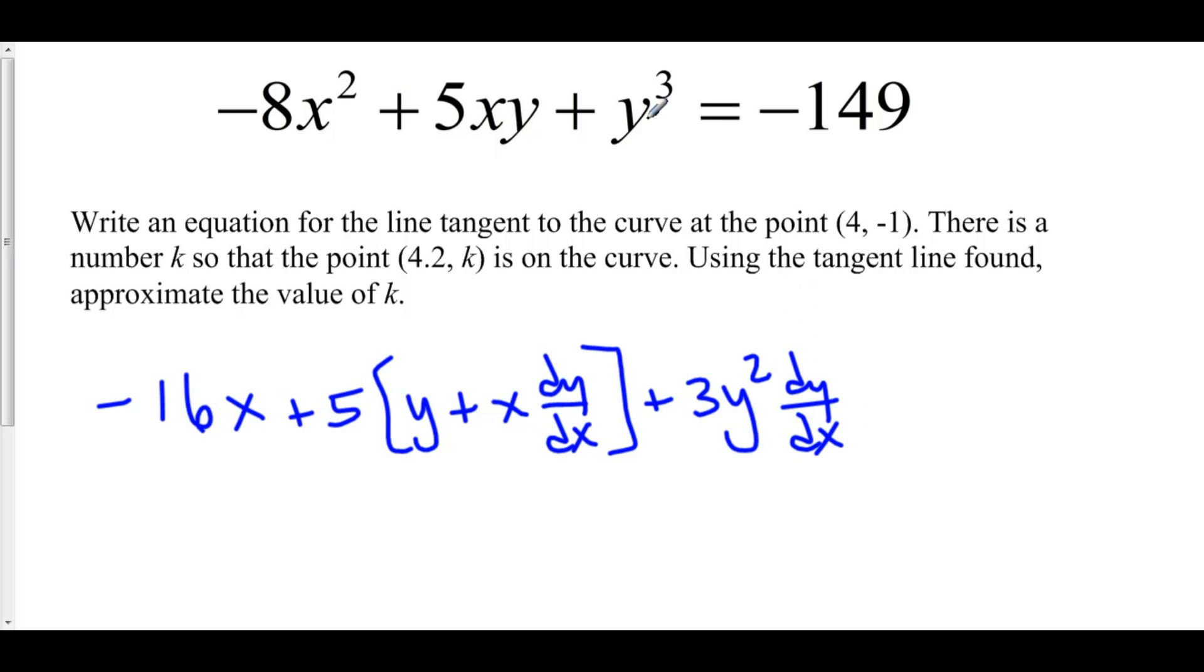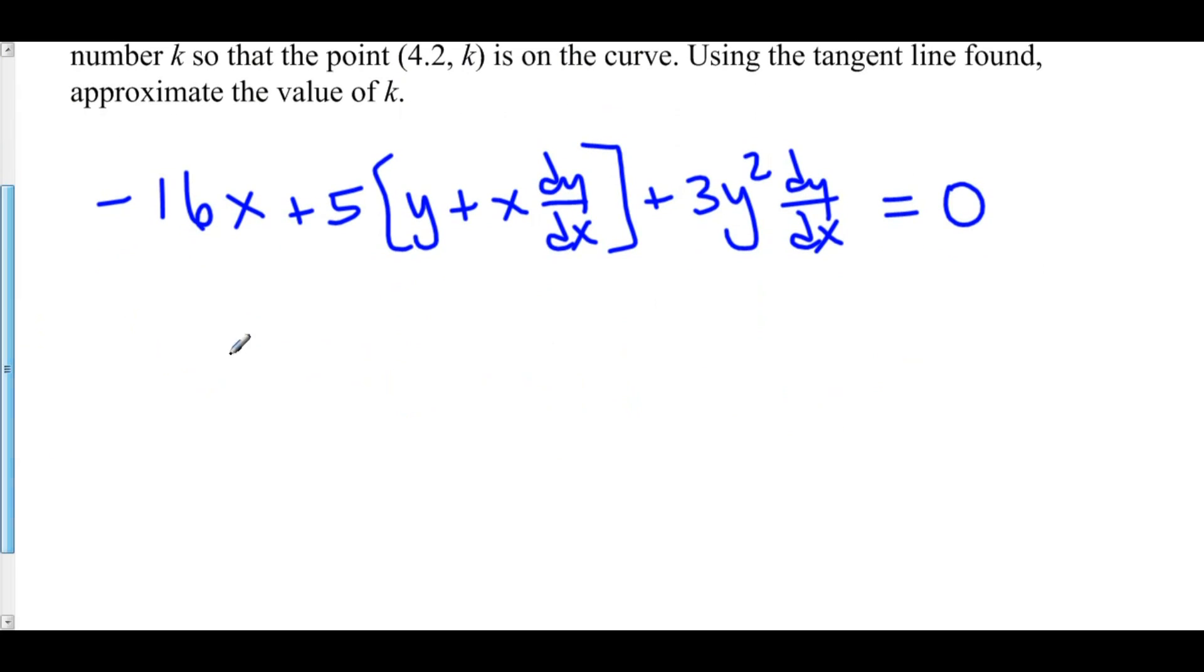Because remember, y is stuff. And the derivative of stuff cubed is 3 stuff squared times the derivative of the stuff. And this is all equal to 0, because the derivative of negative 149 is just 0. Let's distribute the 5. We have negative 16x plus 5y plus 5x times dy over dx plus 3y squared dy dx equals 0.